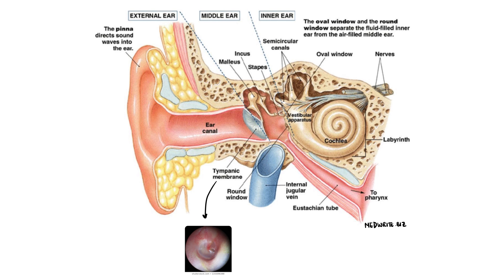The ear is a unique organ in the body that allows us to hear while also being partly responsible for our sense of balance. The ear can be divided into three parts: external, middle and inner ear.